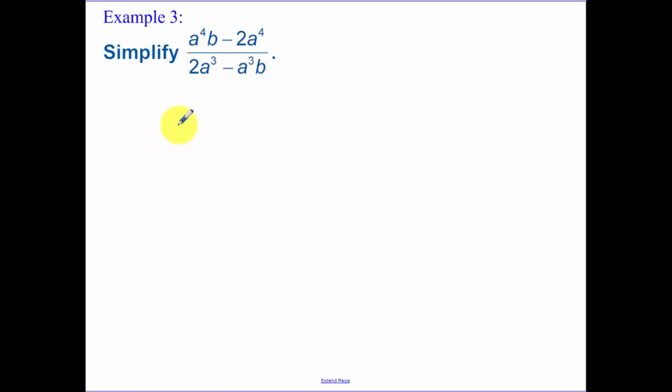Simplifying this example, again just factor. When you look at the top, there's a common factor of a to the fourth that I can factor out. I'm left with ab in the first term and a minus 2 in the second term. Now looking at the bottom, factor out what's in common. I have an a to the third. Then I have a 2 minus ab. That a to the third can cancel and be one. That a to the fourth can cancel and be an a. So we are left with a times b minus 2 all over 2 minus b.